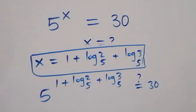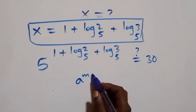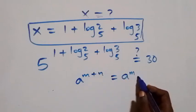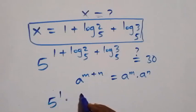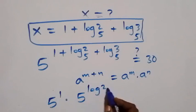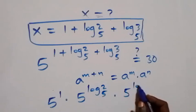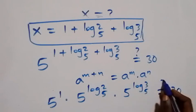From here we apply the law of indices: when we have a raised to power (m plus n), which is equal to a raised to power m times a raised to power n. So what we have here becomes 5 raised to power 1, times 5 raised to power log₅2, times 5 raised to power log₅3, equals 30.